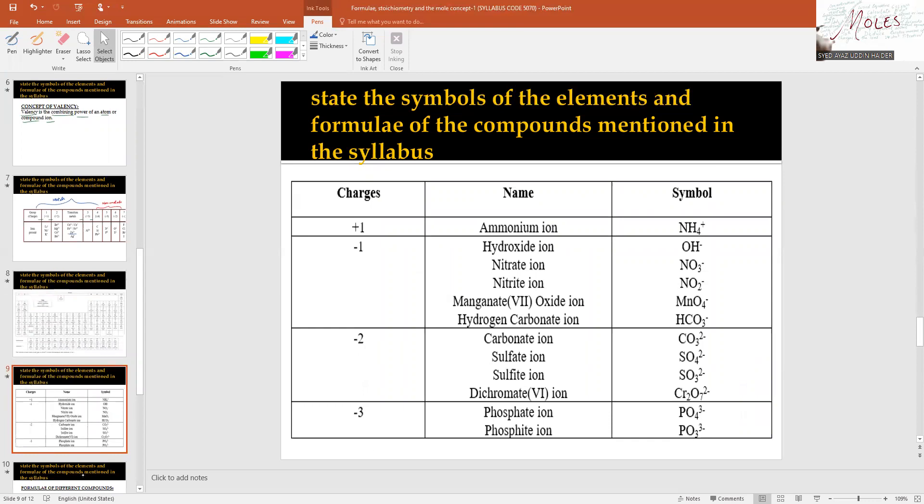Now compound ions are groups of atoms with charges. Examples include: hydroxide ion OH minus, nitrate NO3 minus, nitrite NO2 minus, carbonate CO3 2 minus, sulfate SO4 2 minus, sulfite SO3 2 minus, phosphate PO4 3 minus.